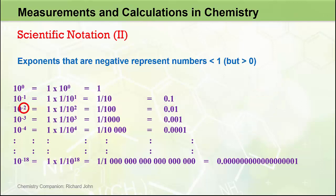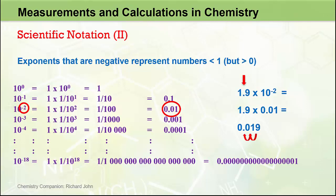10 to the minus 2 actually represents 1 over 10 to the 2, or 1 over 10 squared, which is 1 over 100, which has the value of 0.01. So the number 1.9 times 10 to the negative 2 actually represents 1.9 times 0.01, which equals 0.019. Notice how the decimal place in the coefficient has moved two places to the left, corresponding to an exponent of negative 2. The negative number tells us we move the decimal to the left, and the value of 2 tells us how many places to move it.